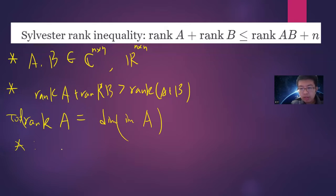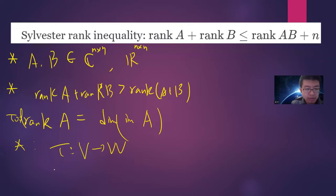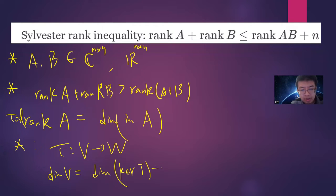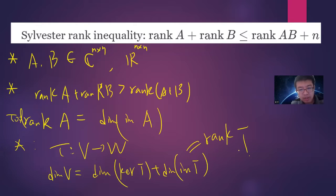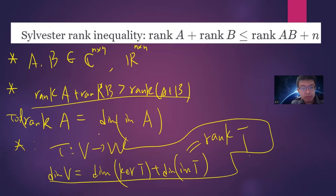The important tool is the rank-nullity theorem. It says that if you have a linear map T from vector space V to W, then the dimension of V equals the dimension of the kernel of T plus the dimension of the image of T, which is the rank of T. With these two elementary tools, you can prove the Sylvester inequality.